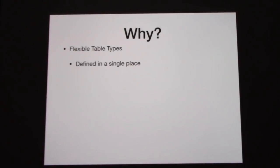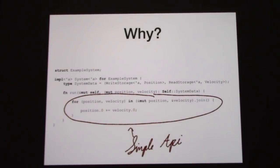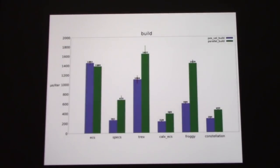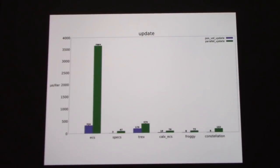Those slides went a lot faster than I thought — any questions? [Question: Can you go back to the last performance table? What does 'update' mean — is that how long it takes to update a certain item in the ECS?] Yes, to iterate through the entire table and update it. [Question: Does this make compile time slow?] The answer is: it's amazingly slow. It produces a lot of traits so it has to look through them all.